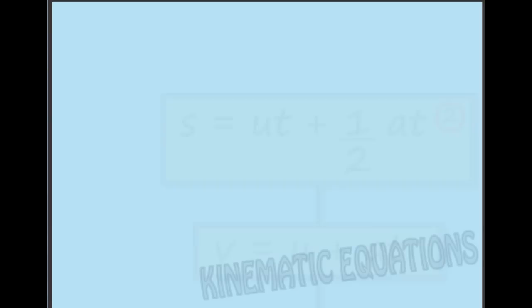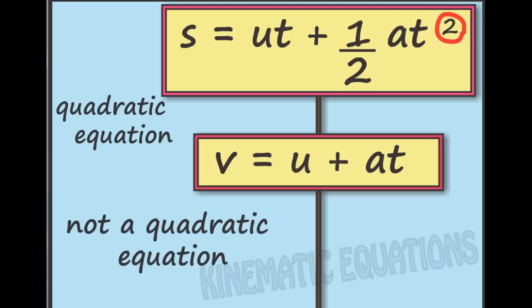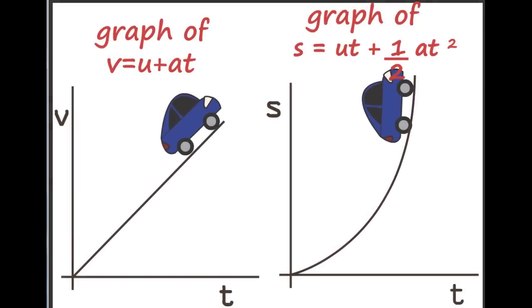Two out of the three kinematic equations are quadratic. As you can see on the screen, the above one is a quadratic equation and the below one is not a quadratic equation. Let us look at the graph of these equations. We can see through the graph that these equations are very useful in modeling motion in real world scenarios. You will study more about this in your physics class.